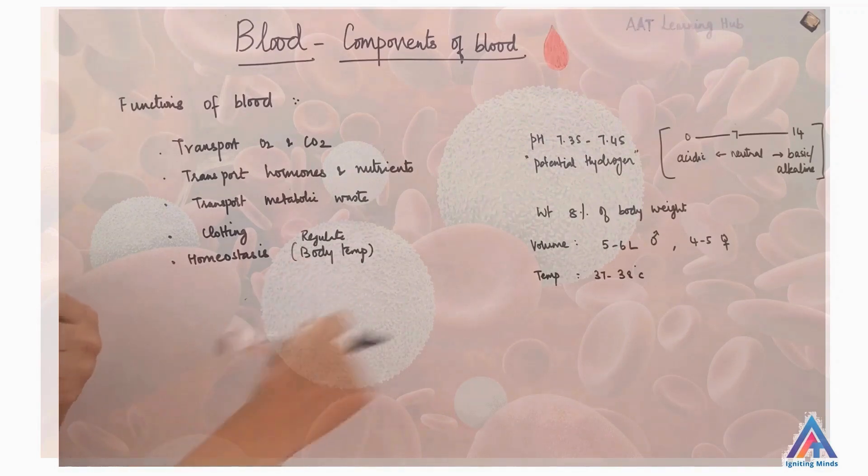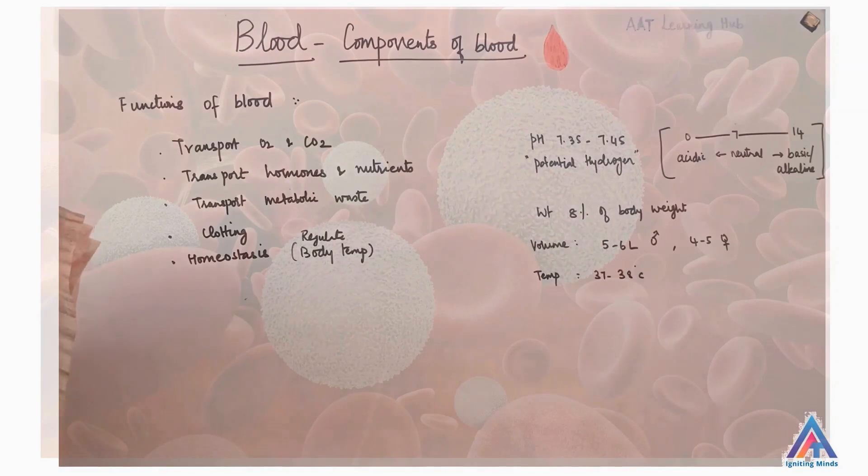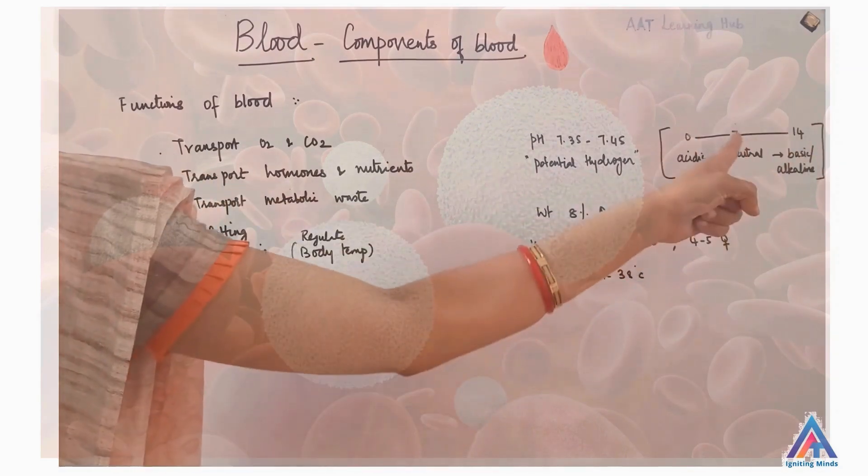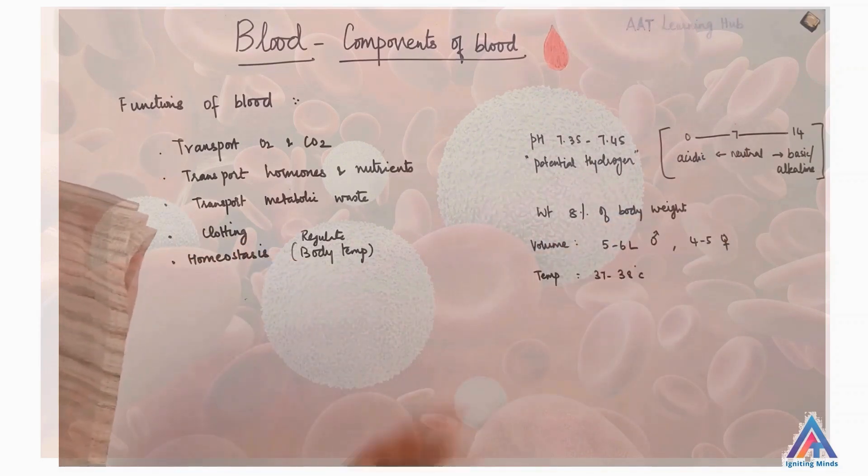The pH of blood is 7.35 to 7.45 in healthy body. What is pH? It's the potential hydrogen or concentration of hydrogen in a solution. So, on a scale of 0 to 14, 7 is neutral. Anything below 7 is acidic and above 7 is basic or alkaline.